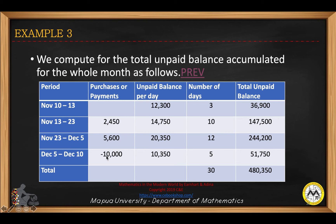A payment is made on December 5. $5,600 will be added to $14,750, giving $20,350 as the unpaid balance per day from November 23 to December 5, which is equivalent to 12 days. Multiplied by $20,350, that gives the total unpaid balance for 12 days. Then, negative $10,000 for the last period is added to $20,350, giving $10,350, which is equivalent to 5 days. Multiplied by $10,350, that gives $51,750.